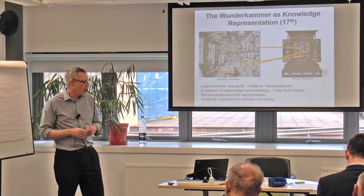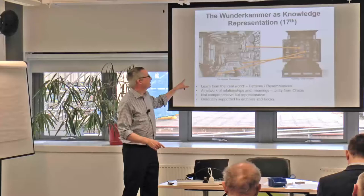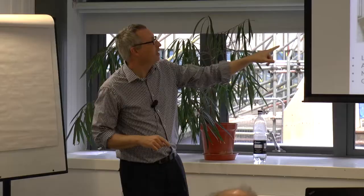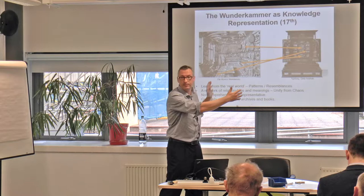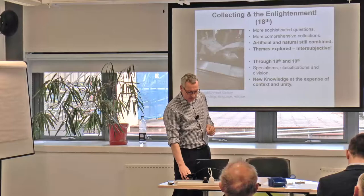The knowledge system is simple but gradually augmented with archives and books, and these connect together. This is the Augsburg cabinet of curiosity in the Getty Centre. These things have resemblances — a network of resemblances and meaning across all these cabinets of curiosity. That's an important concept for ResearchBase because we're about knowledge representation.